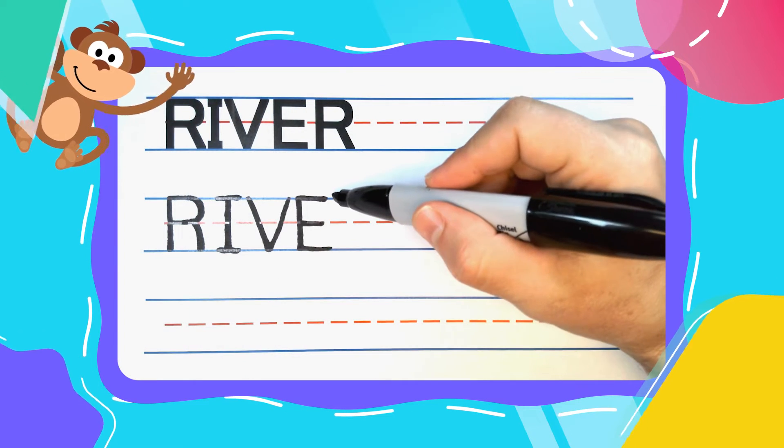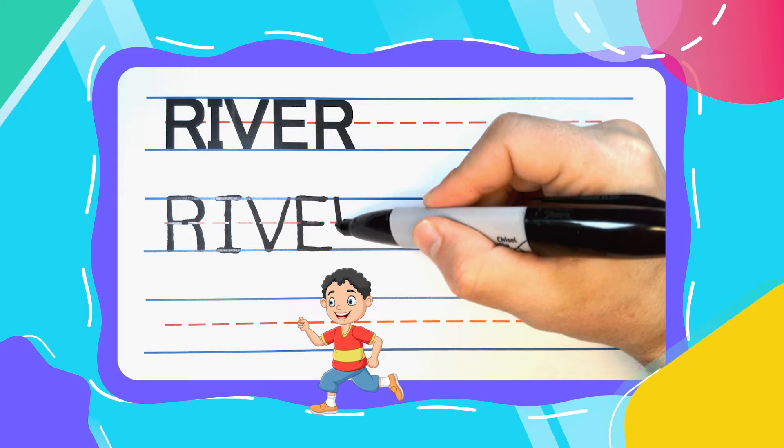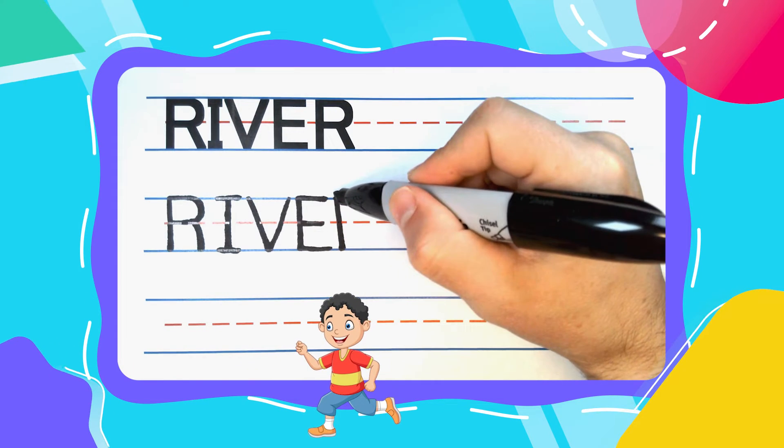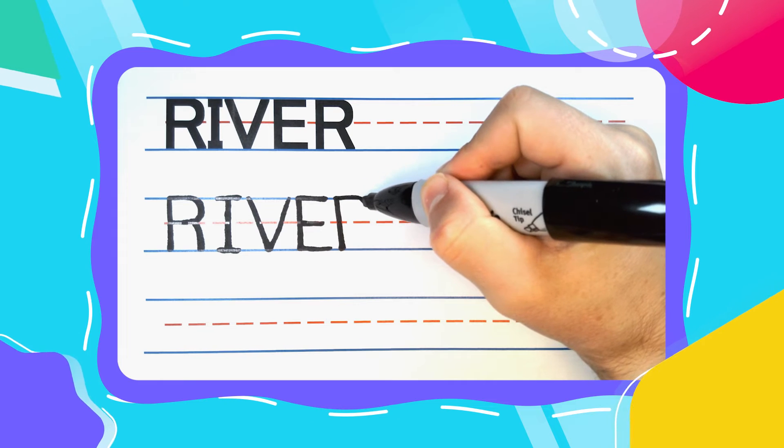The last letter in River is another runnin' R, just like the first one. Straight up and down to start. Bounce out to the right.